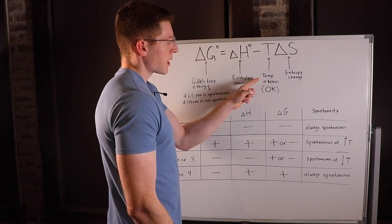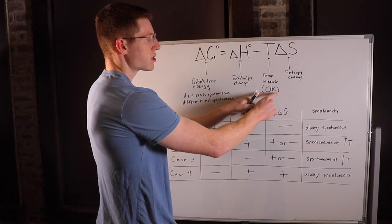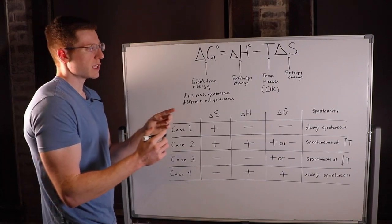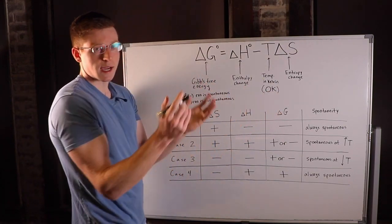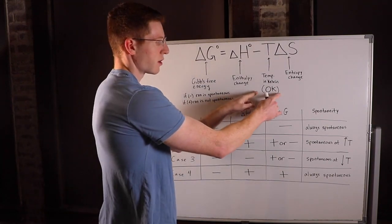T is the temperature in Kelvin. I put in parentheses here zero Kelvin because this is the lowest that Kelvin can go. That's important because Kelvin can never be negative. The lowest it goes is zero—that's where it bottoms out.